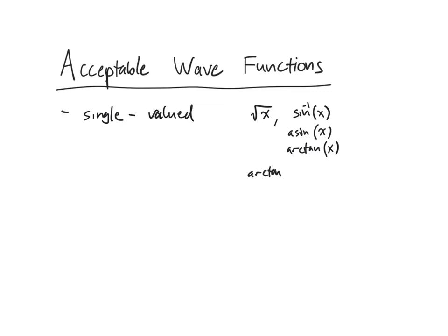Specifically, to give you an example that shows you that arctan is not single valued, the arctan of 1 can be equal to π over 4 and it can be also equal to 5π over 4 and 9π over 4. So that means that since all of these different functions are multi-valued, they're not going to be acceptable wave functions.